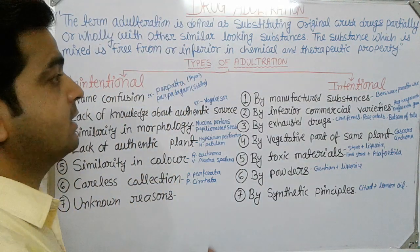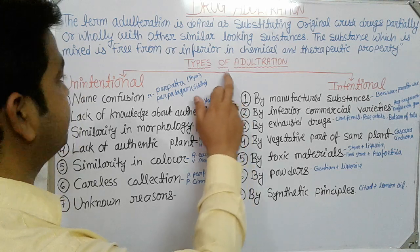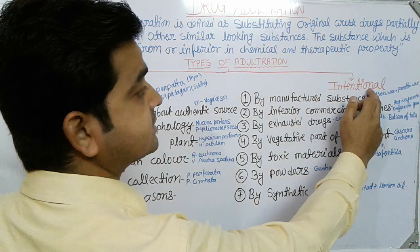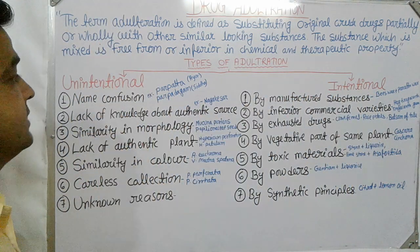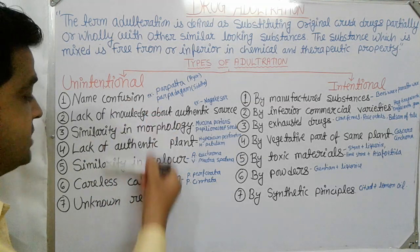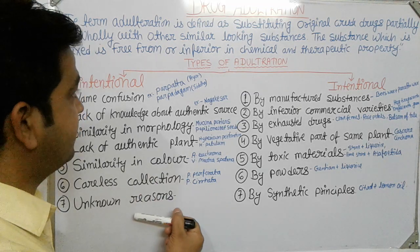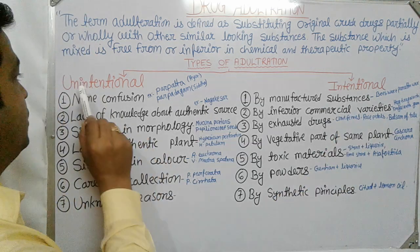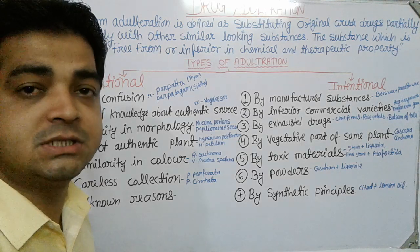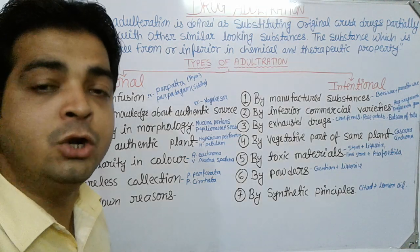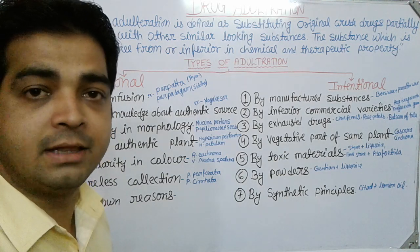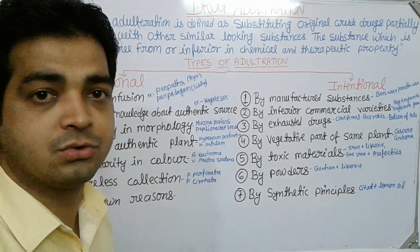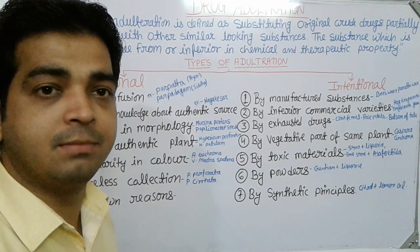When we classify adulteration, it is of two types: first is unintentional adulteration, and second is intentional adulteration. There are seven possibilities of unintentional adulteration and seven possibilities of intentional adulteration in practice. Unintentional adulteration is done unknowingly during collection by people involved in collecting crude drugs from wild or cultivated sources.